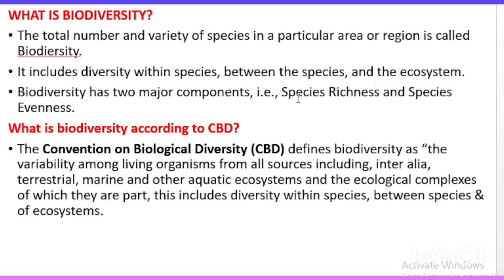Beta diversity is the number of species unique to each environment, used to calculate the species diversity between two nearby ecosystems. In alpha diversity we count the number of species, but in beta diversity we look at species uniqueness and calculate species diversity between two ecosystems.